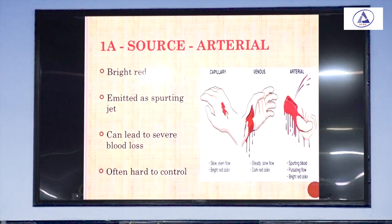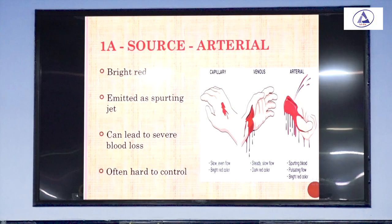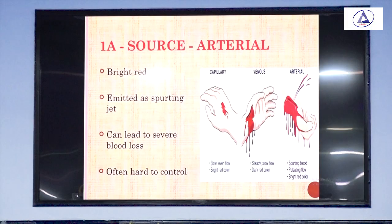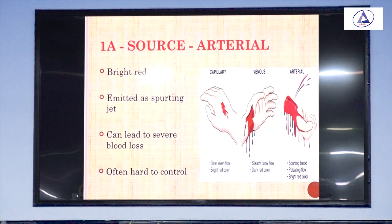Arterial blood — which is shown on the right side — is bright red and emitted as a spurting jet. So that means the jet flow can lead to severe blood loss, and it is often hard to control. When the bleeding is bright red in color, emitted as a jet, when it is profuse, and when it is tough to control — this is arterial bleeding.